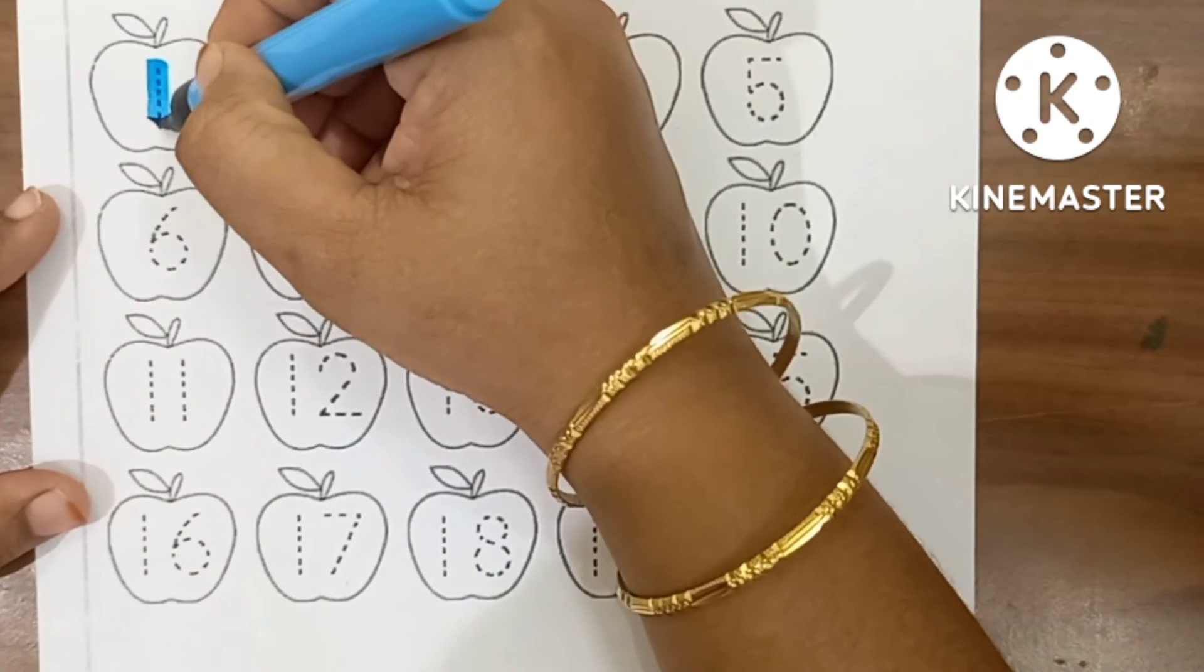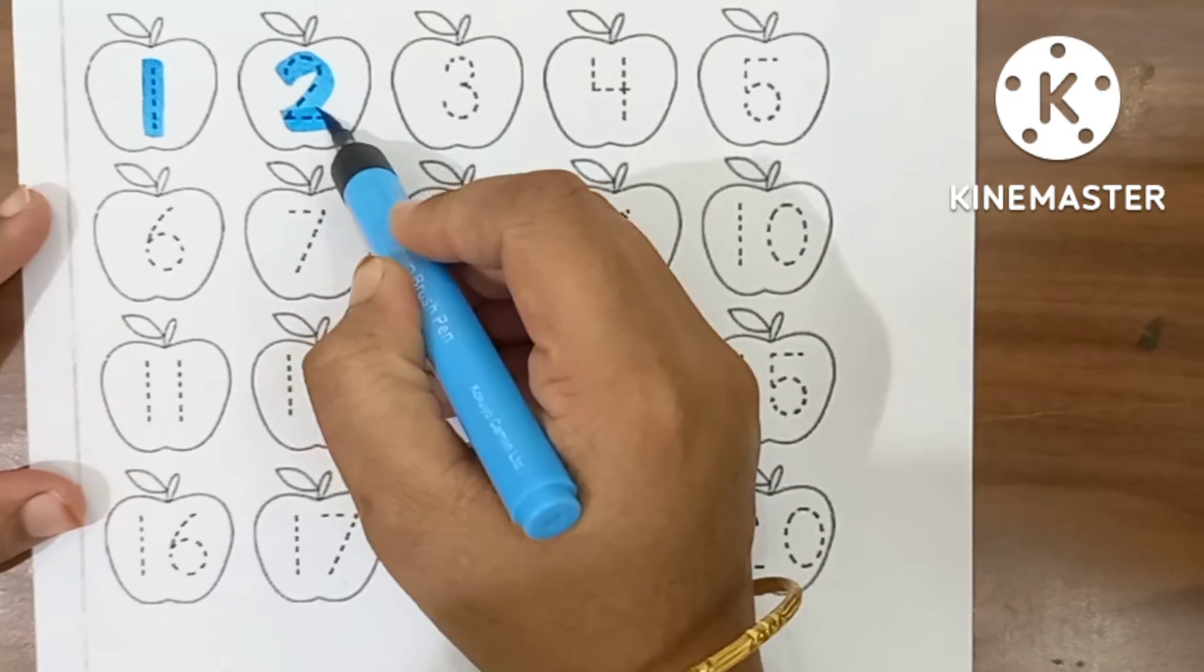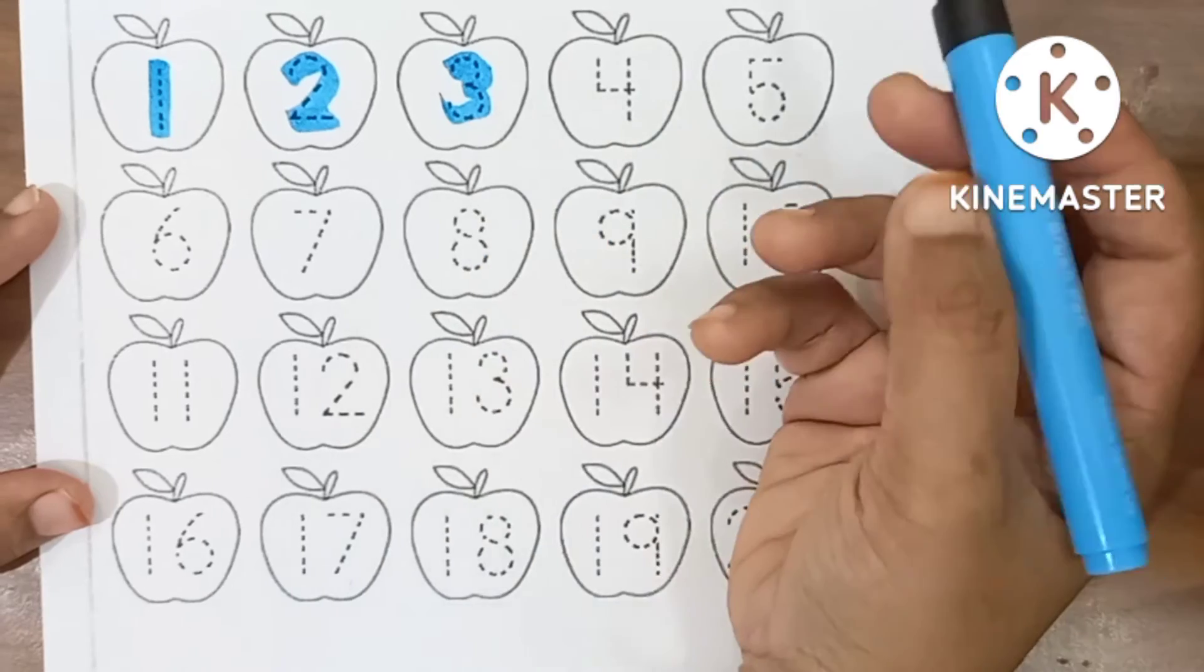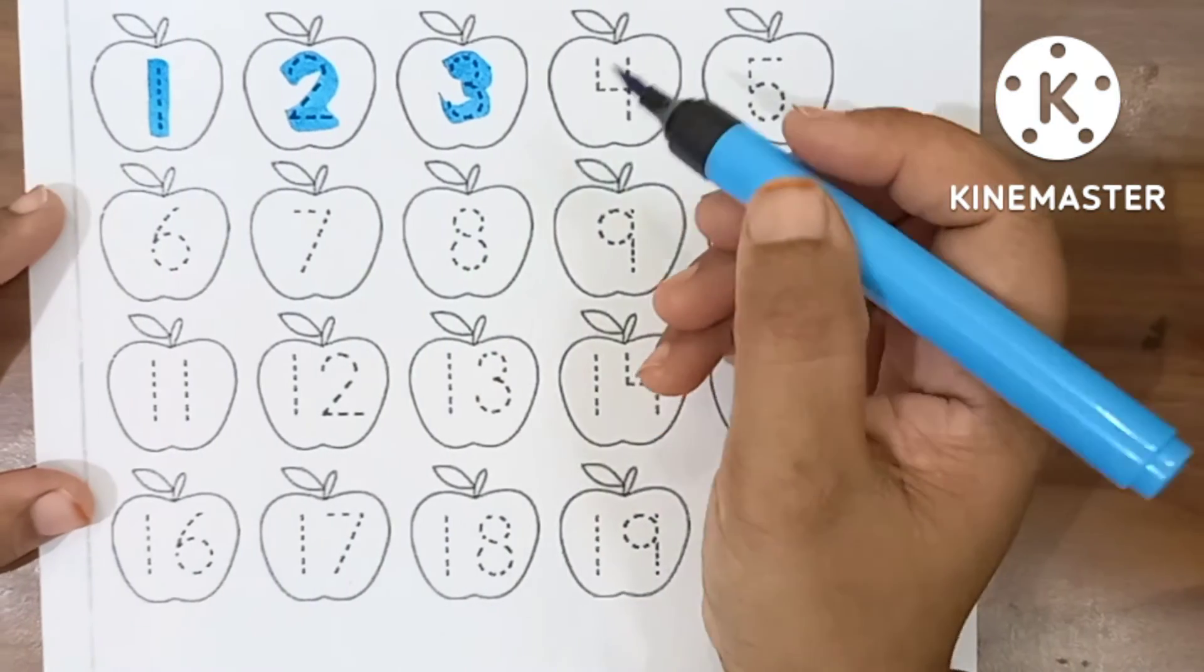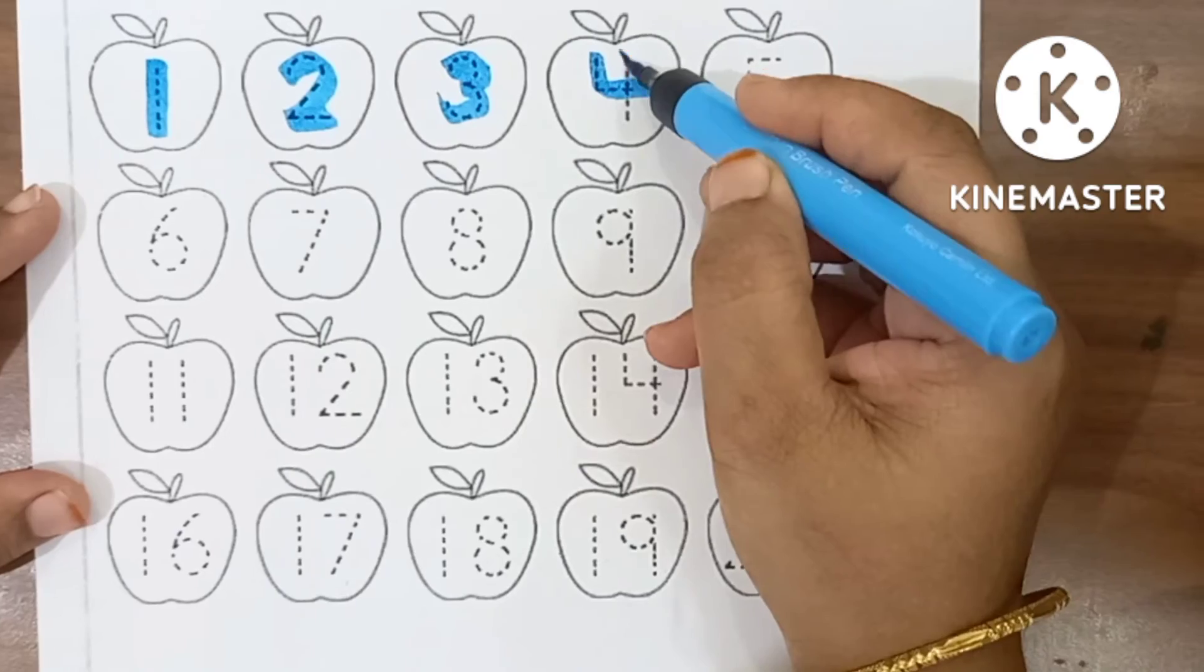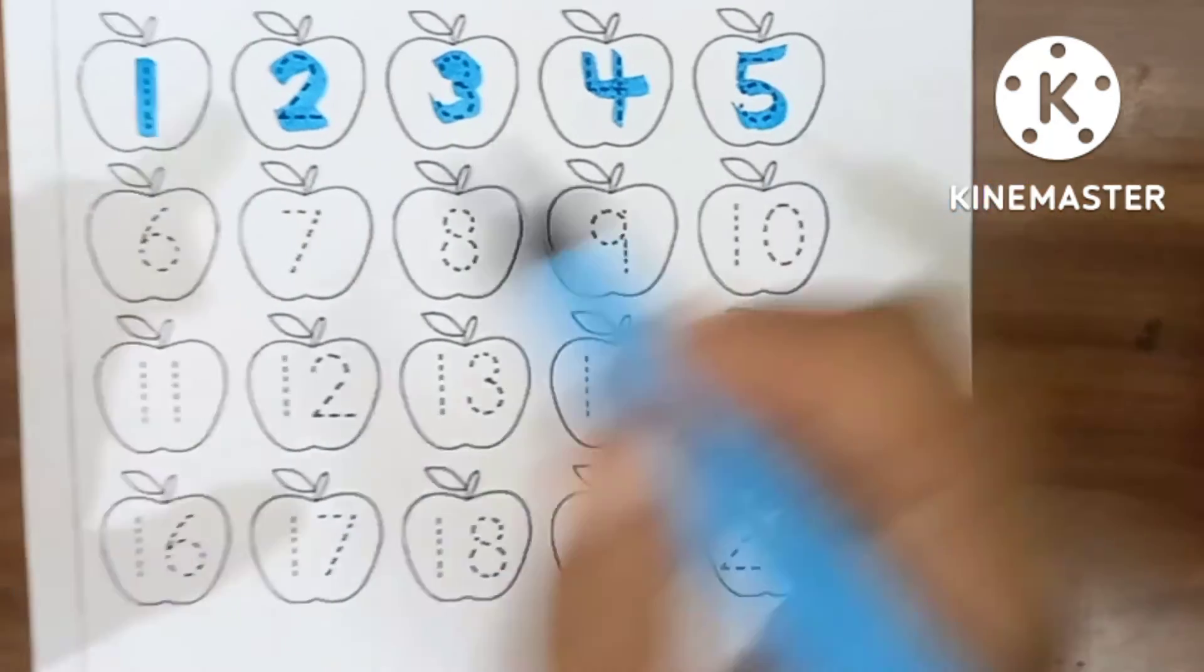1, O-N-E-1. 2, T-W-O-2. 3, T-H-R-E-E-3. 4, F-O-U-R-4. 5, F-I-V-E-5.